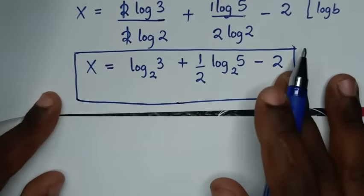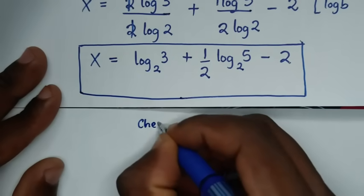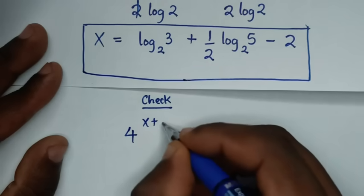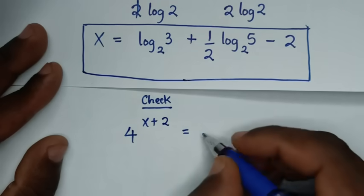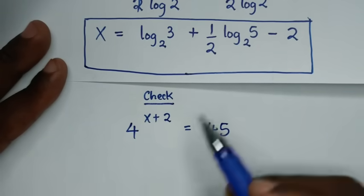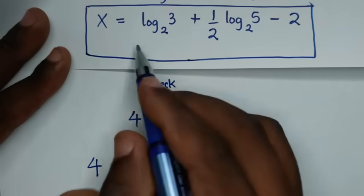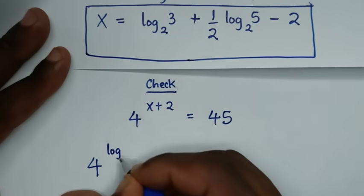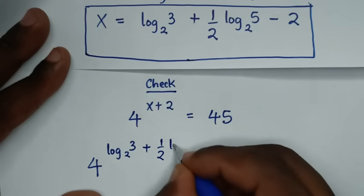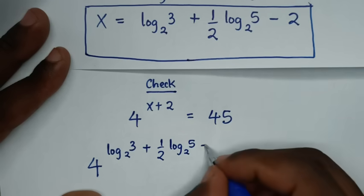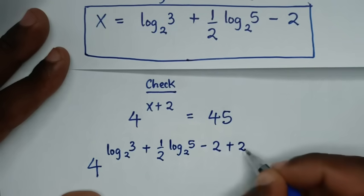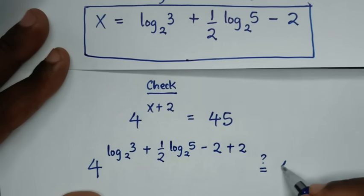Now in the next step, let's check this answer if it is correct. From our problem, which is 4 power of x plus 2 is equal to 45, we substitute our answer into the position of x. So it will be 4 power of log of 3 base 2 plus a half log of 5 base 2 minus 2, then plus 2, is equal to 45.